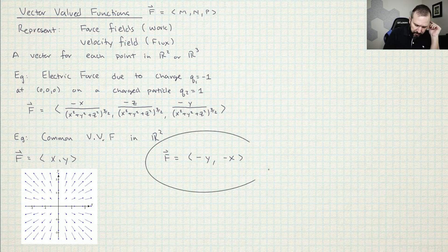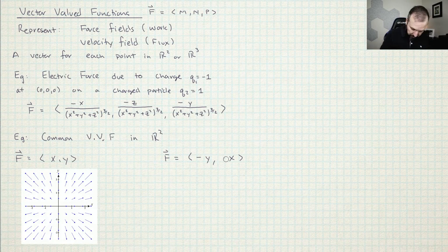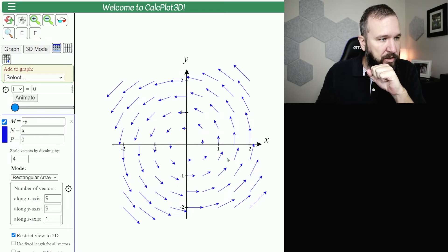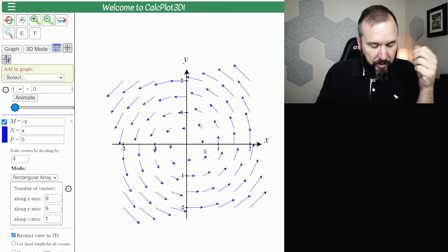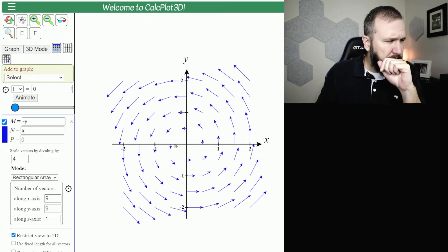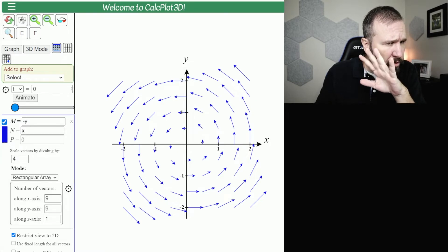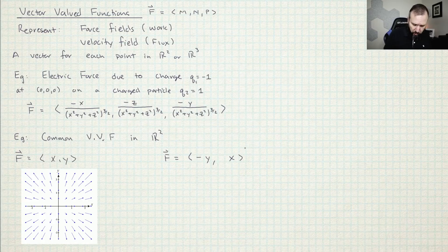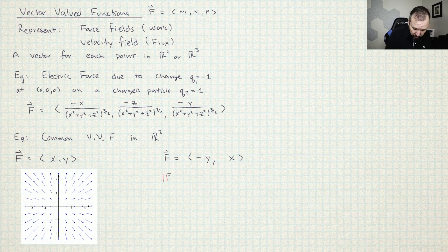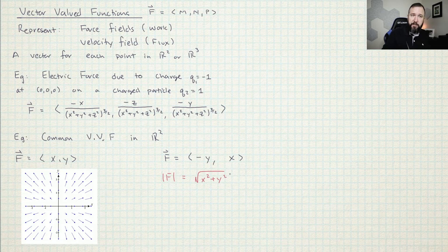The other vector-valued function has M equal to negative Y and N equal to positive X. You can imagine that if this was the velocity of a fluid, then if you dropped a little sailboat in there, it would spiral around. But notice how the vectors in the middle are shorter than the vectors on the outside. To fix that, I'm going to turn all these vectors into unit vectors by scaling down by the magnitude, which is the square root of X squared plus Y squared.